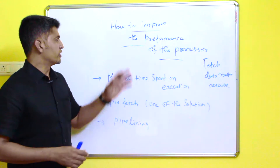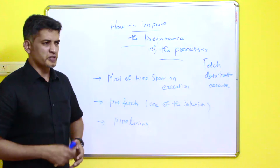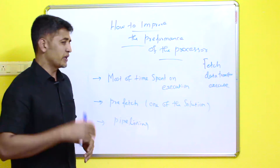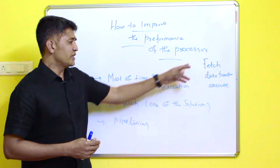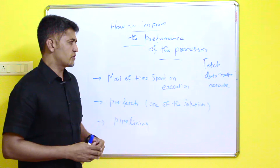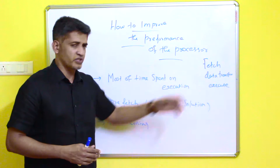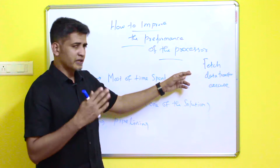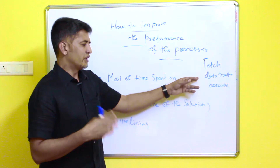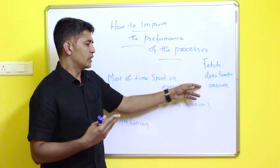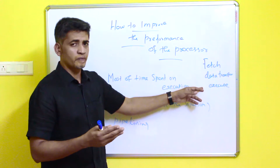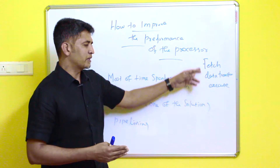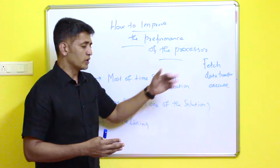Hi friends. In this video we are going to discuss how to improve the performance of the processor. Consider instruction execution — there are three major stages: fetch, data transfer, and execution. Comparing these three stages, fetch may require very little time, data transfer needs more time, and execution requires the most time compared to the other two stages.